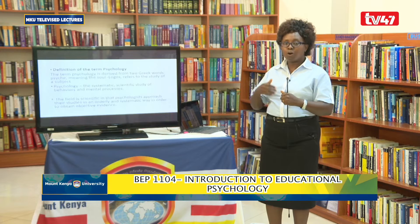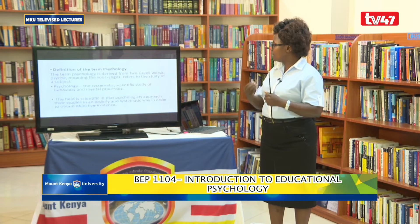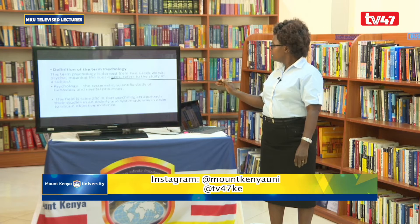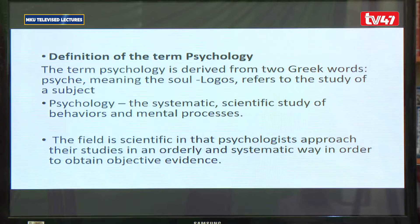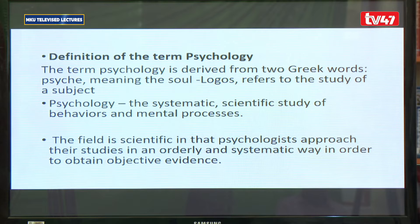Over time, the definition of psychology has changed, such that today we define the term psychology as the systematic scientific study of behaviors and mental processes. In other words, in psychology it will be difficult for us to know the way you are thinking because psychology is about thinking. We can't know the way you are thinking unless we see the way you are behaving. Even if you were to open your brain, the best thing we can see is gray matter, and gray matter cannot tell us what you are thinking. So we infer your thinking from behavior.